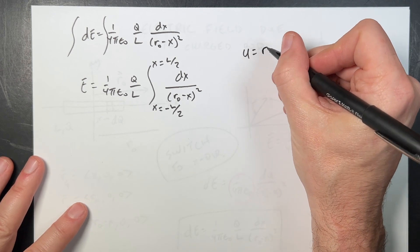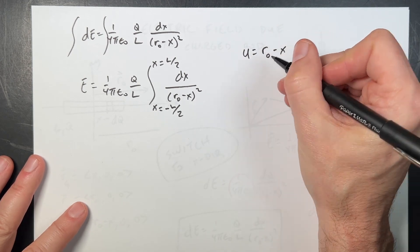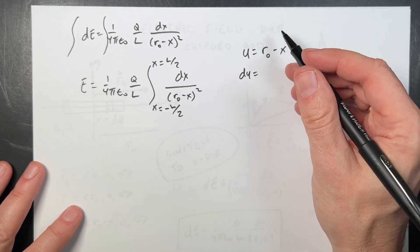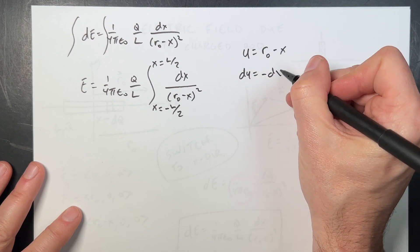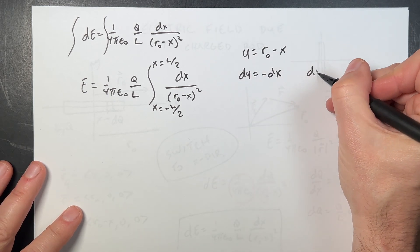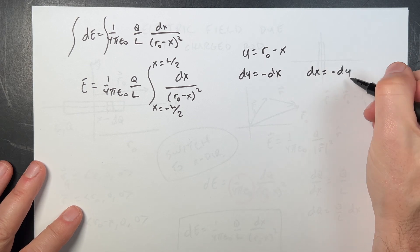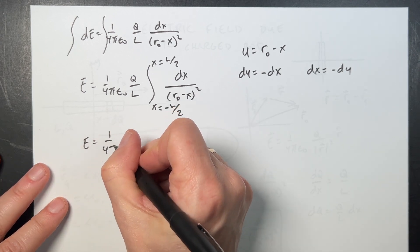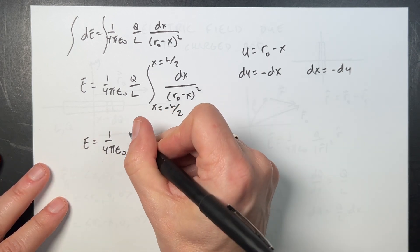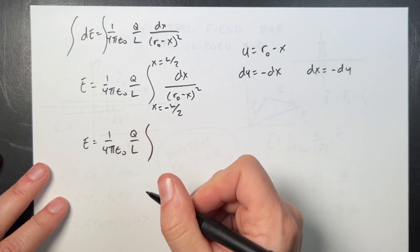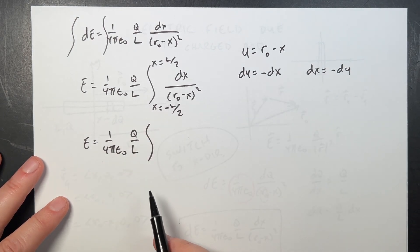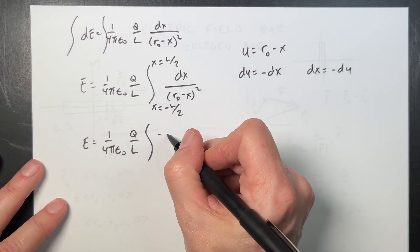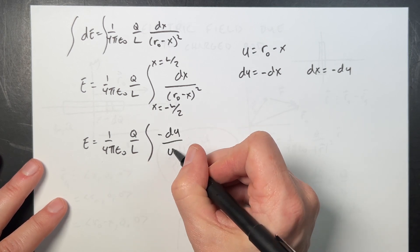u equals r0 minus x, then du would be the derivative of r0. That's just a constant, so that's gone. The derivative of negative x is negative dx. So dx is negative du. And I can put this for you. So now I'll get the following. E equals 1 over 4π epsilon naught q over L. I'm going to leave off the limits, because I don't care at this point. I just want to integrate and then I'm going to switch back. So I'm going to put negative du over u squared. Now that's an easy integral. It's just a power rule.